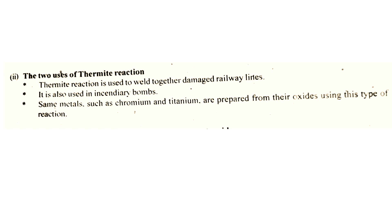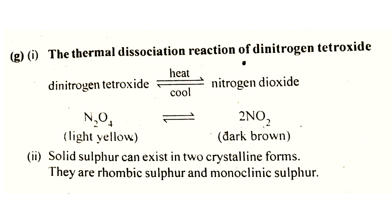Some metals such as chromium and titanium are prepared from their oxides using this type of reaction. The dissociation of dinitrogen tetroxide is a reversible reaction: N2O4 reversibly forms NO2. N2O4 is light yellow and NO2 is dark brown. Crystalline forms include rhombic and monoclinic allotropes.